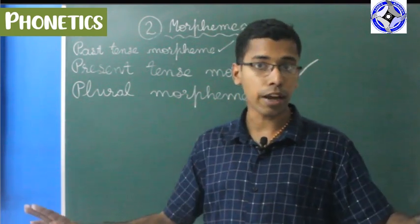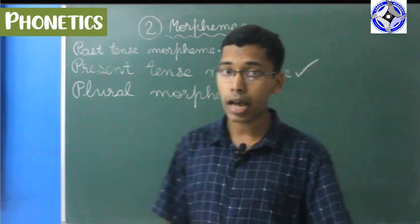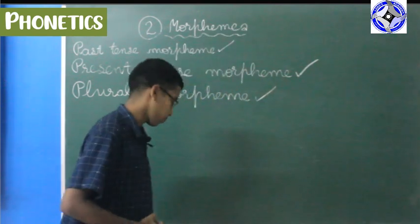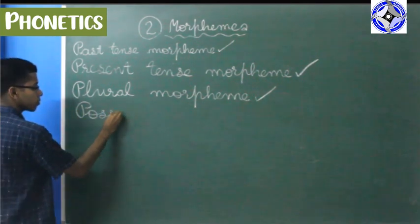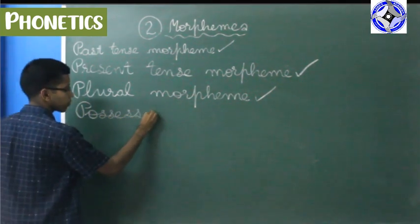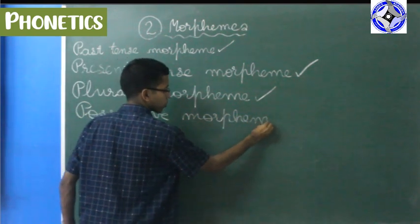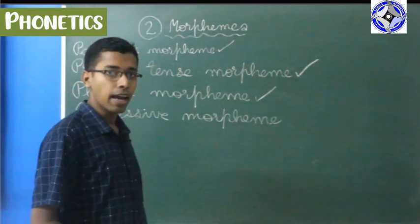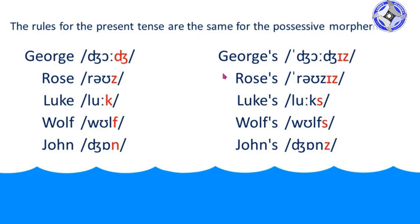And the same is the case with the next morpheme — the possessive morpheme. There is no rule change. The rules of the present tense are the same for the possessive morpheme.